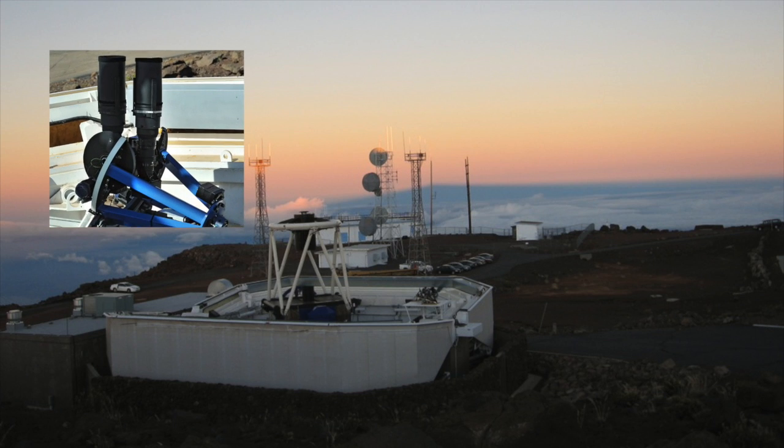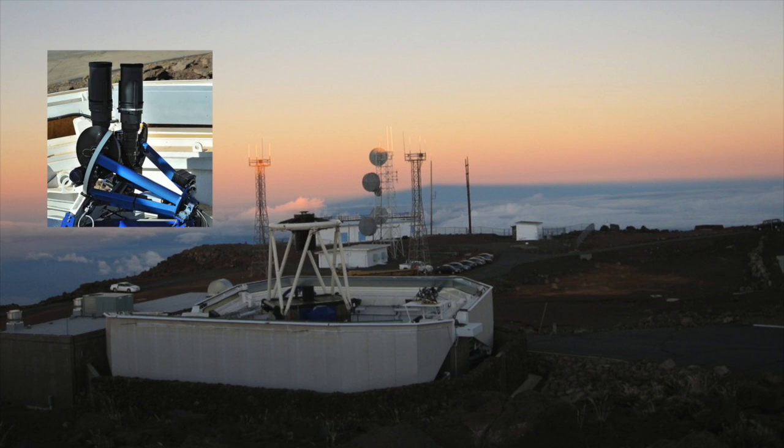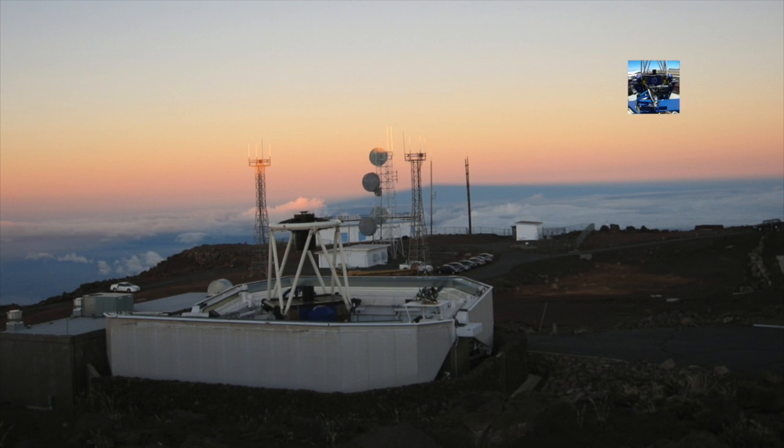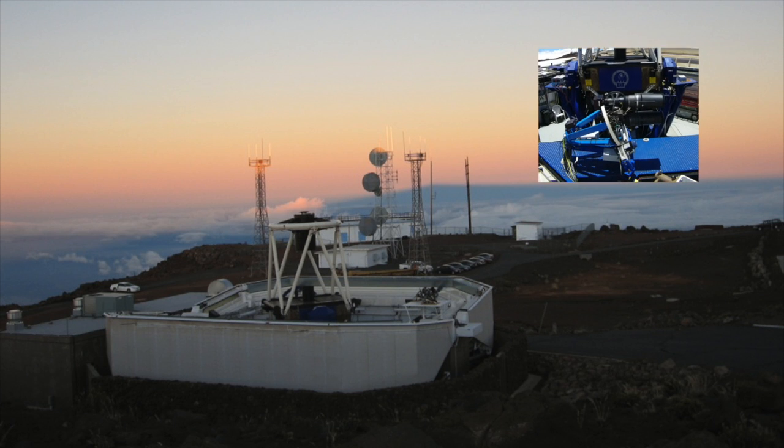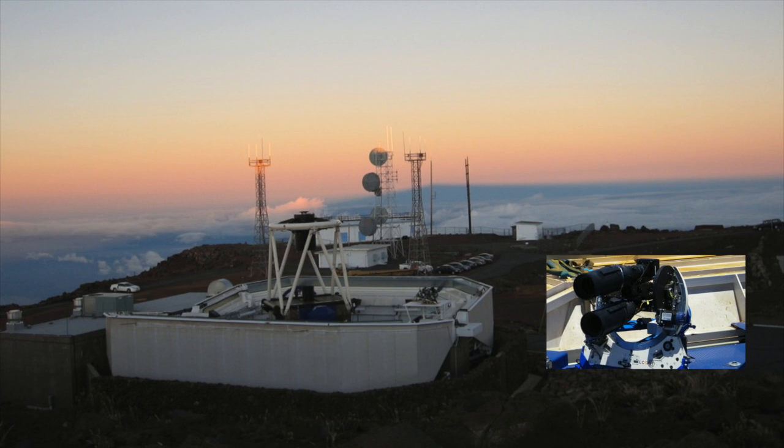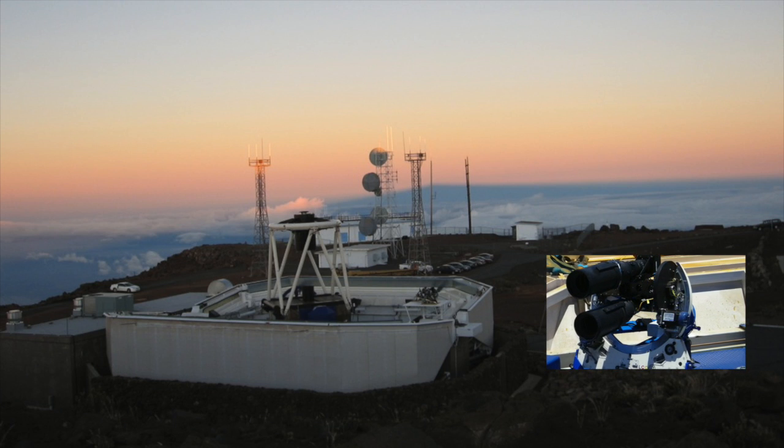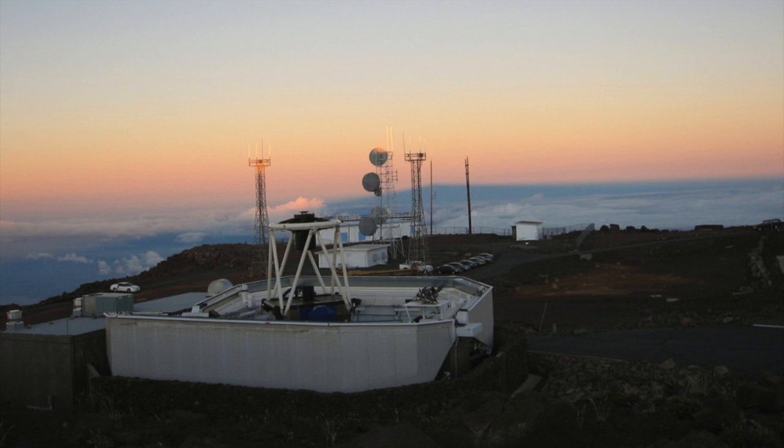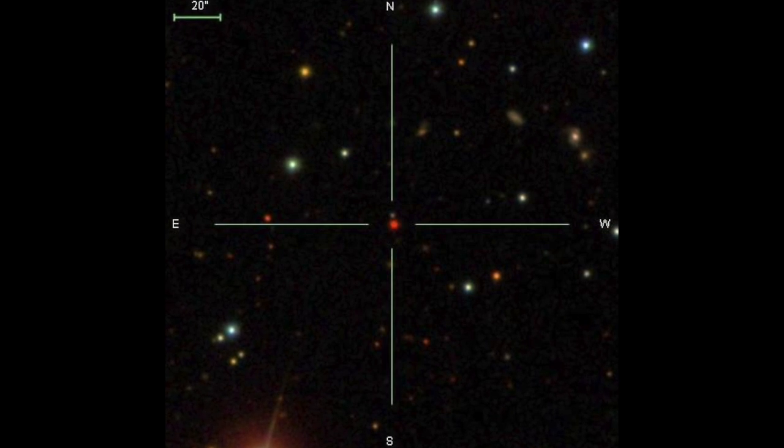The ASASSIN survey scans the extragalactic sky visible from Hawaii roughly once every five days in the V-band. Our transient detection pipeline was triggered on September 24, 2013, and a cross-check of the transient's position in archival SDSS data revealed that the source was a red star named SDSS J0510.